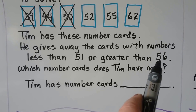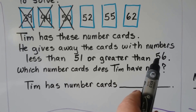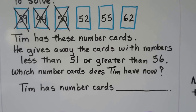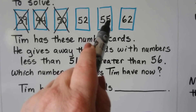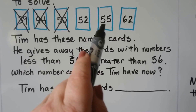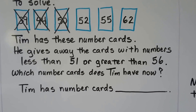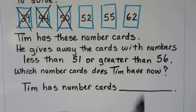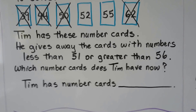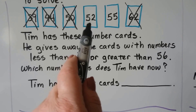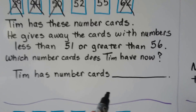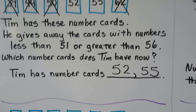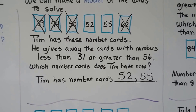So let's try the greater than 56 condition. Is 52 greater than 56? They both have five tens, but 52 has two ones and 56 has six ones — not greater. How about 55? They both have five tens, but 55 has five ones and 56 has six ones — that's less, not greater. How about 62? It's got six tens and 56 has five tens — yes, that is greater than 56, so he gave it away. Which number cards does Tim have now? He has 52 and 55.